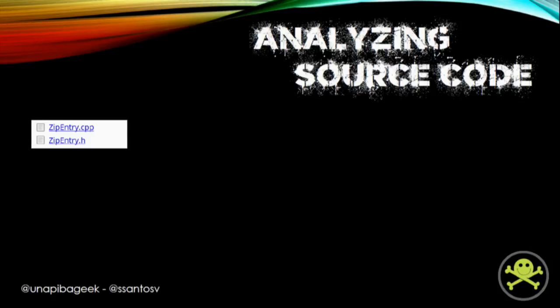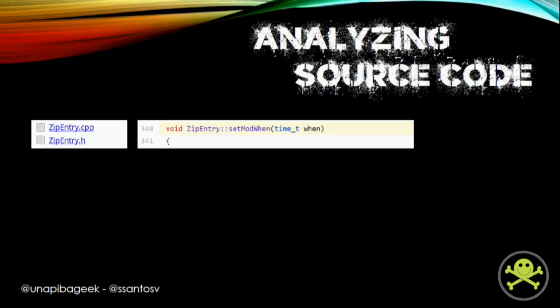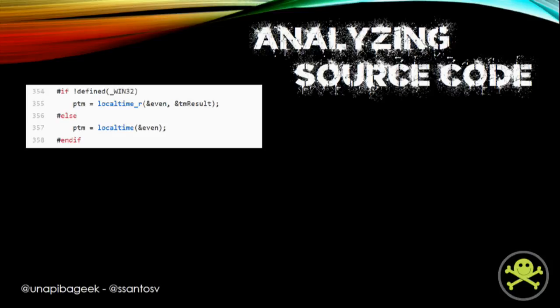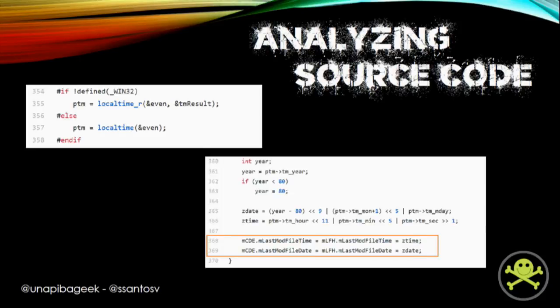setModWhen is located inside the zip_entry.cpp file of the AAPT source code. Remember that 'when' is equal to zero. Inside this method there is another variable of time_t type named 'even', and its value equals 'when', so 'even' is zero too. Immediately after, 'even' is used as a parameter for the localtime() function. A tm structure named 'etm' is where localtime() saves its result. After that, the result is used to assign the last-modified field for every file added to an APK.